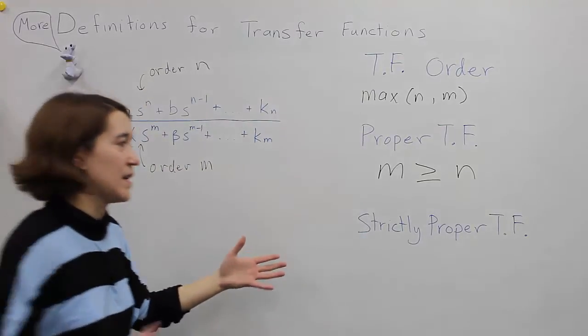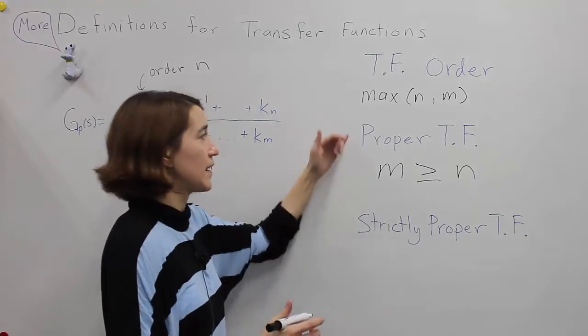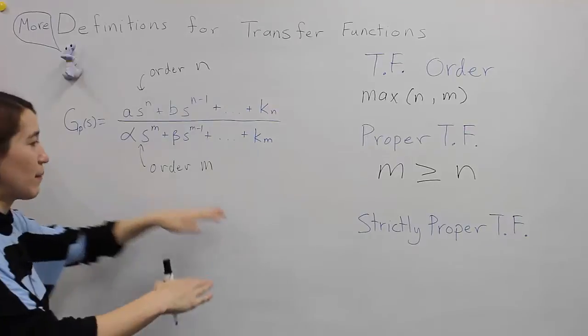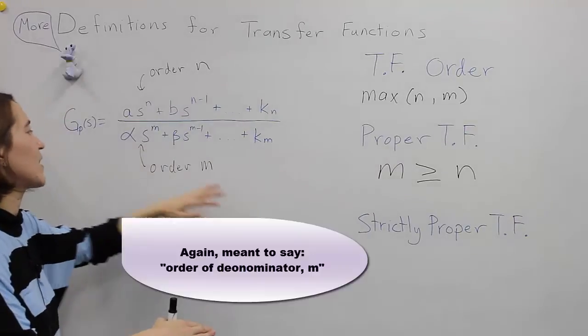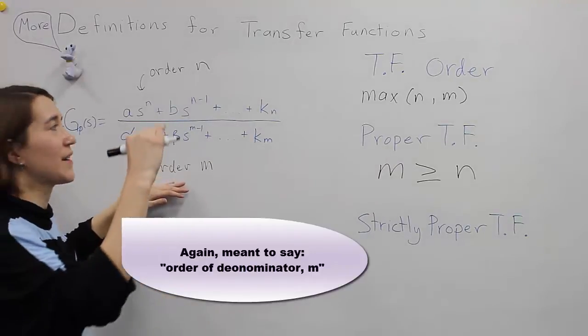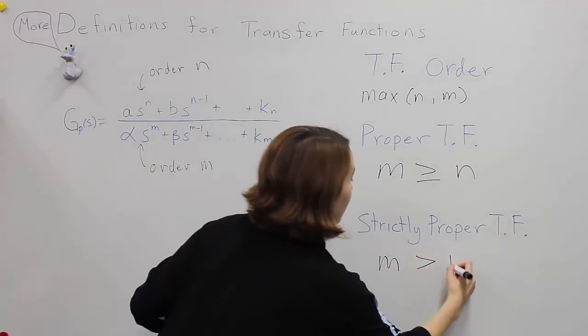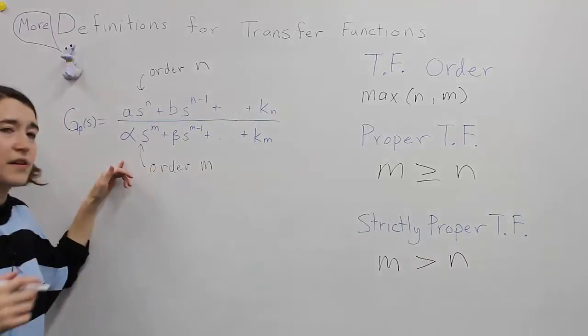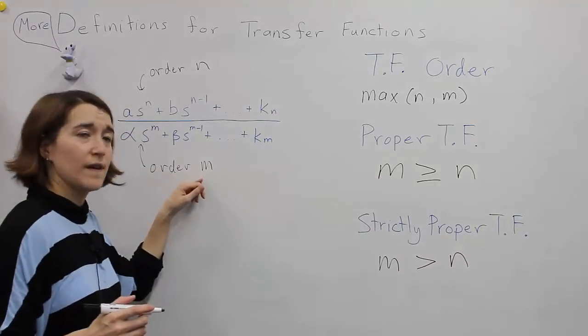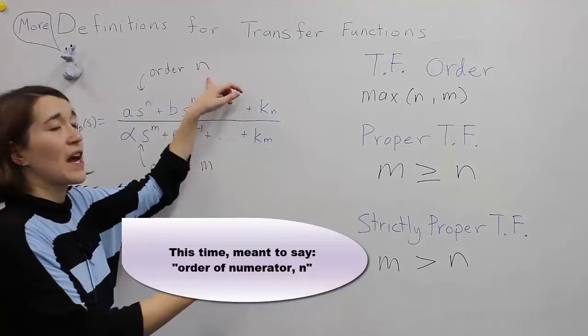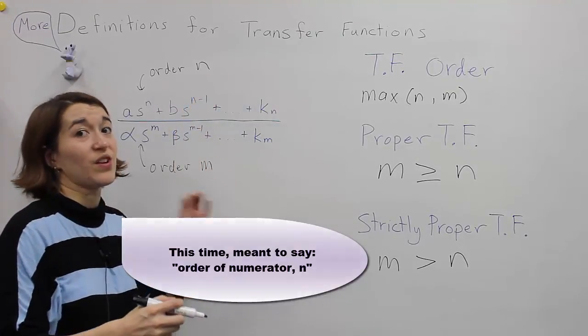The next definition is strictly proper. This is a type of proper transfer function, but in the strictly proper transfer function, the order of m must be higher than n. So m must be greater than n. So in the denominator, if you had a two, for a strictly proper transfer function, the power of n must be one or zero. It could not be two.